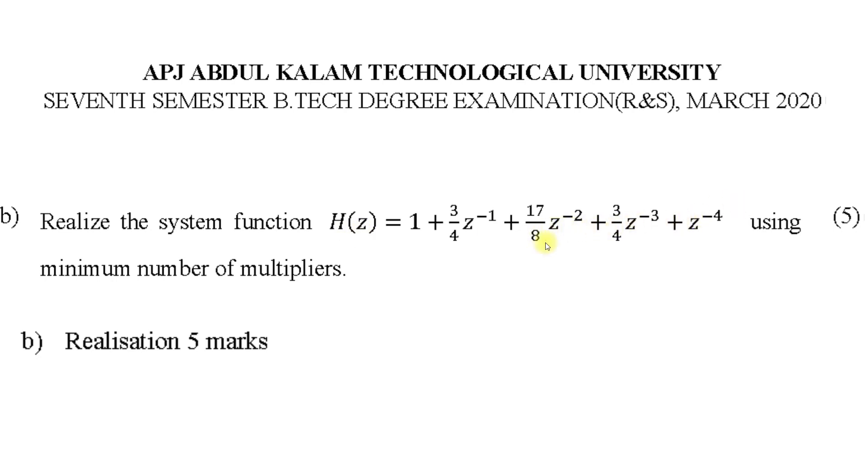So the structure is that of a linear phase FIR filter. You can easily score 5 marks in this type of question. The order is 4, which means you'll be having 4 delay elements and 4 adders. So it's an odd system, so you can follow the structure of odd system.